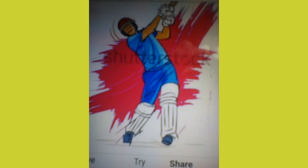4. Boundary (Four): A batsman hits the ball and it crosses the boundary rope by rolling on the ground. Then it is called a boundary or four runs. 5. Sixer: if the ball reaches the boundary from the air as a fly ball, it is called a sixer.